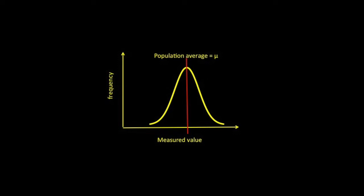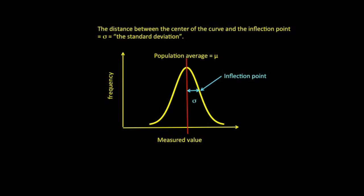For such a large data set, we call the average the population average and represent it with the Greek letter mu. We will convey to others the width of our distribution curve by stating the distance between the average value and the measured value at the inflection point on the curve. This distance is called the standard deviation for the data set. Note that it has the same units as the measured value.